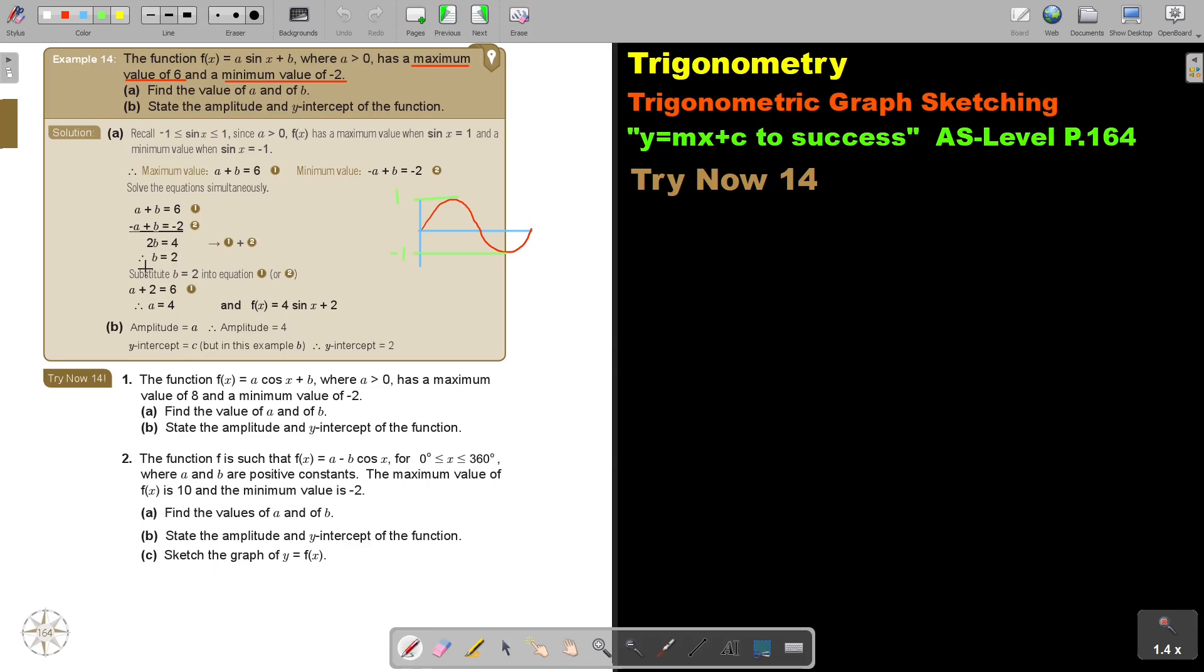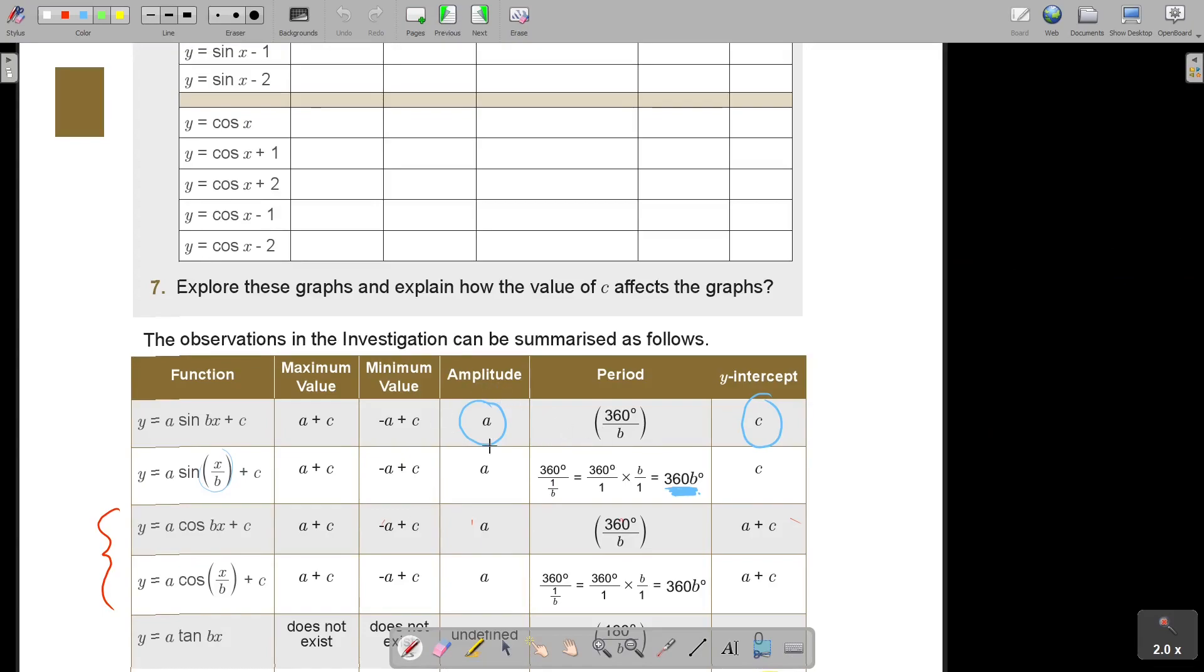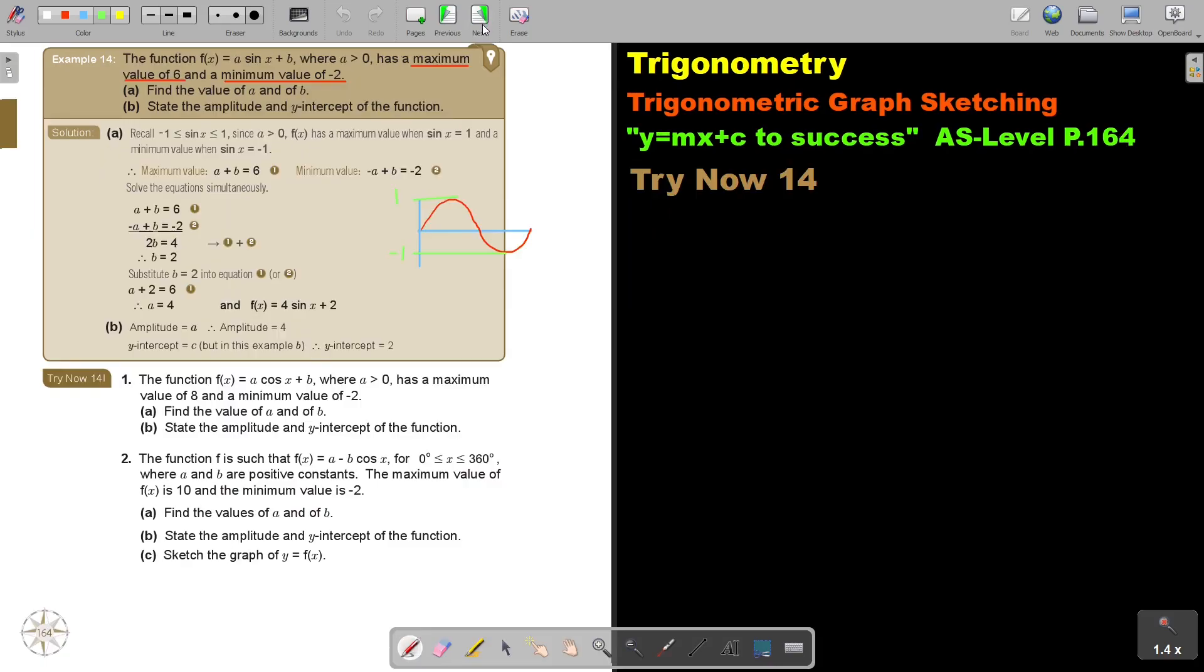And then you can just substitute, there is your equation, and then state the amplitude and y-intercept of the function. So the amplitude is a and I can take you again back. Can you see the amplitude is a, the y-intercept is c but in this case it will just be b now. That table will really help you. The amplitude is a which in this case is 4 and the y-intercept is c which in this case is going to be 2 and that's how you got the different values.